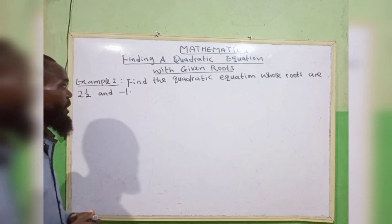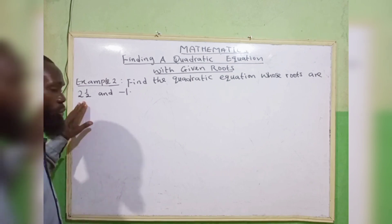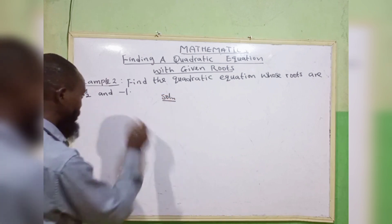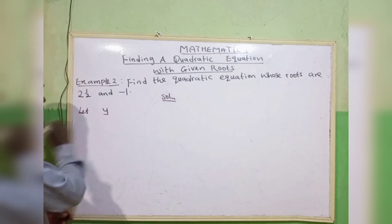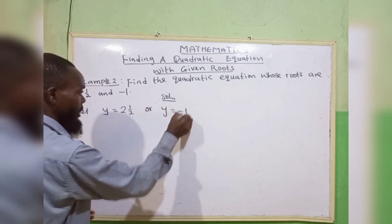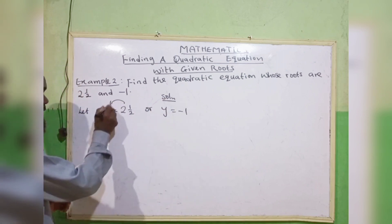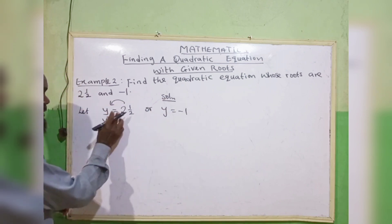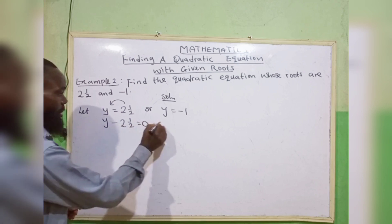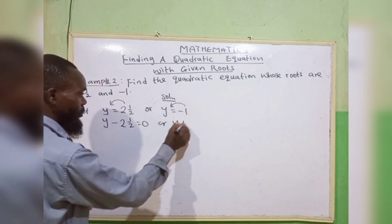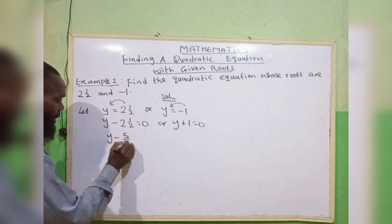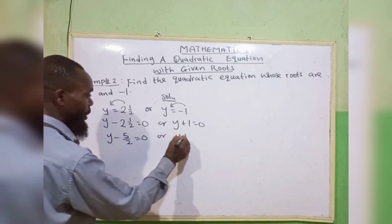Example 2: find the quadratic equation whose roots are 1/2 and minus 1. The method is the same as the first example. Let y equal to 1/2, or y equal to minus 1. When we rearrange, we get y minus 1/2 equals 0, giving us y minus 5/2 equals 0, or y plus 1 equals 0.